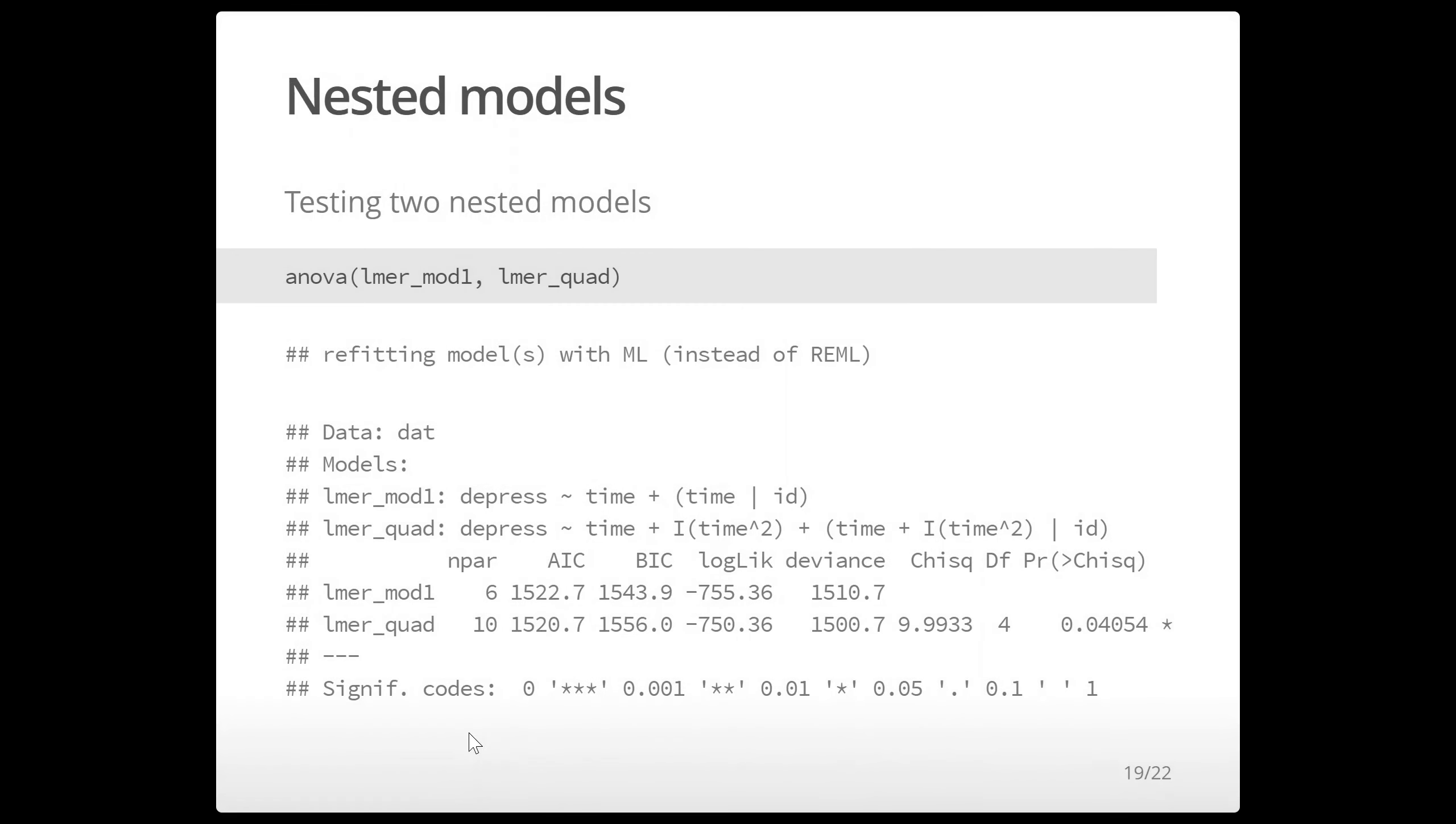And so here we are comparing two nested models. So the quadratic model, the linear model is nested within the quadratic model. And note that even though the fixed quadratic effect was not significant when we looked at it before, this likelihood ratio test is significant.